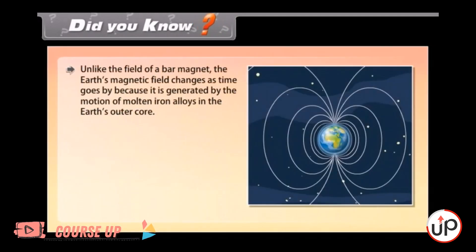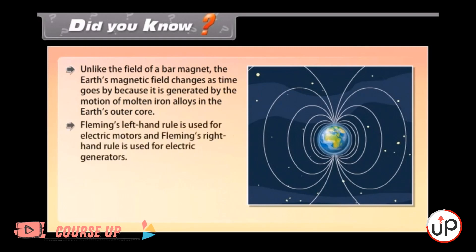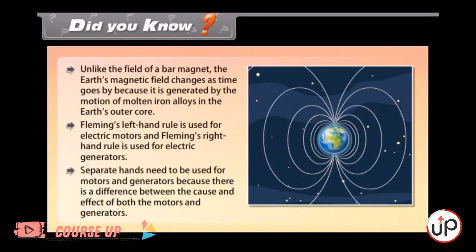Did you know? Unlike the field of a bar magnet, the earth's magnetic field changes as time goes by because it is generated by the motion of molten iron alloys in the earth's outer core. Fleming's left hand rule is used for electric motors and Fleming's right hand rule is used for electric generators. Separate hands need to be used for motors and generators because there is a difference between the cause and effect of both the motors and generators.